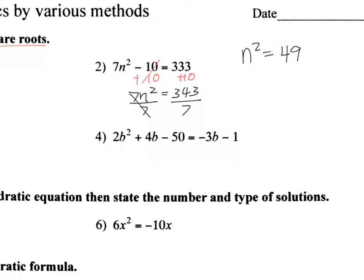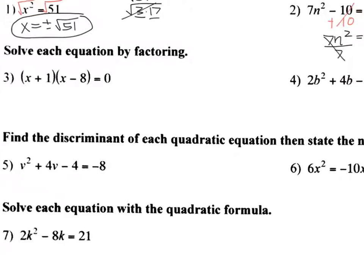Now, since I have a square by itself, nothing else with it, now I can take the square root of both sides. And again, whenever I take the square root, I have two cases, positive, negative. 49, I can take the square root of, and that is 7. So that's one method. Solve by taking the square root.